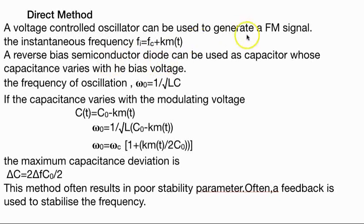A direct method to generate FM is shown in this example. What we use is a voltage controlled oscillator or bias semiconductor diode that can be used as a capacitor whose capacitance varies with the bias voltage. The omega zero is 1 upon root LC. The variable capacitance is given by this formula. The maximum capacitance deviation is 2 delta fc0 by 2.